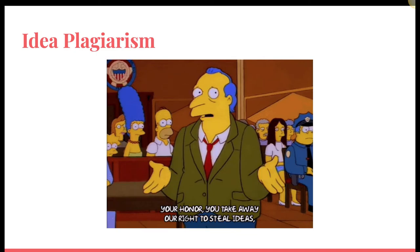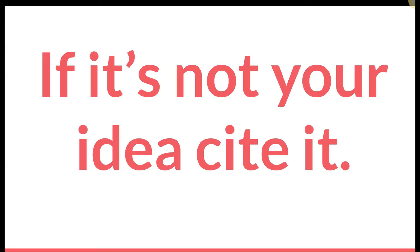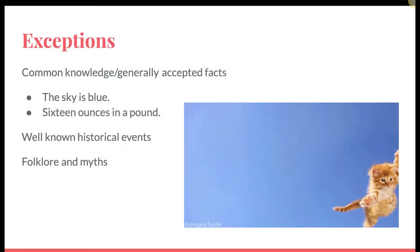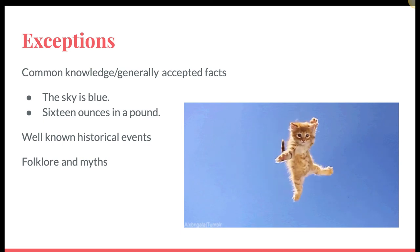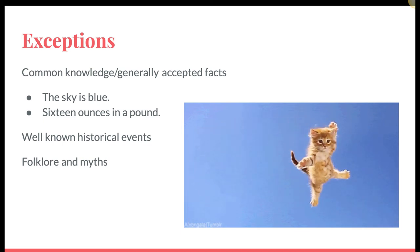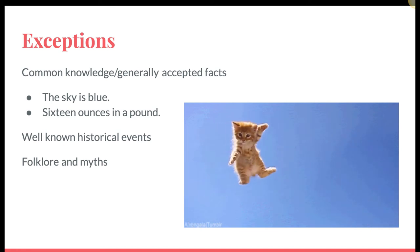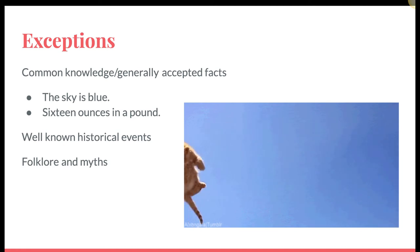Idea plagiarism: if something isn't your own idea, you need to cite it. And if something isn't common knowledge — even if you are an expert in it — you would still need to cite a source. For example, if you're a computer science major and you can explain how the internet works, that's great, but it's not common knowledge, so you would need to find a source and cite it. Exceptions to this rule include common knowledge and generally accepted facts, such as 'the sky is blue,' '16 ounces in a pound,' or 'Nashville is the capital of Tennessee.' You don't need to cite that information, nor well-known historical events, folklore, and myths.